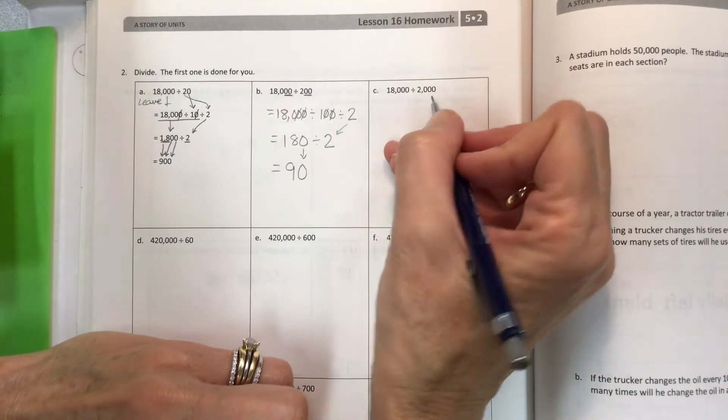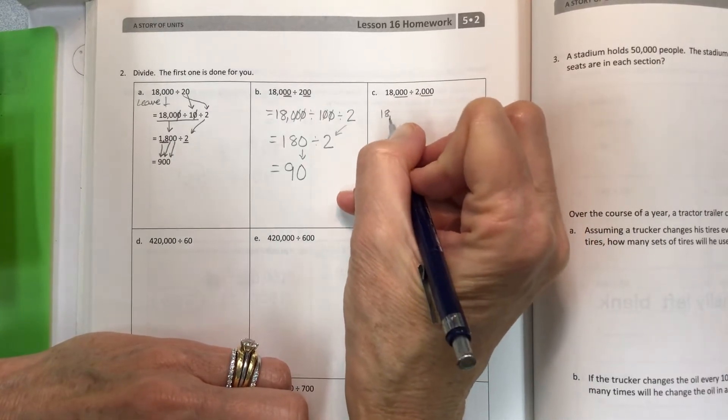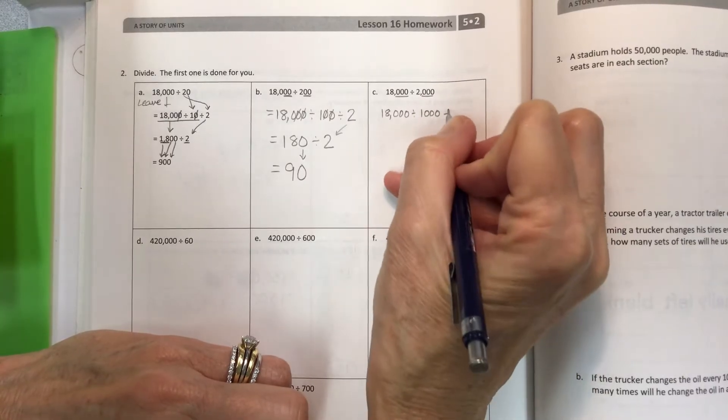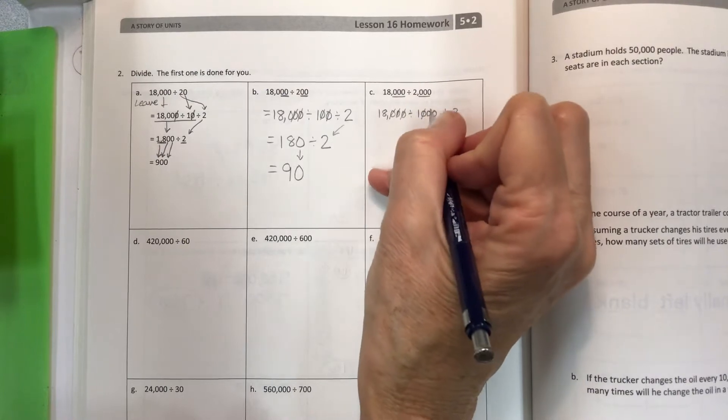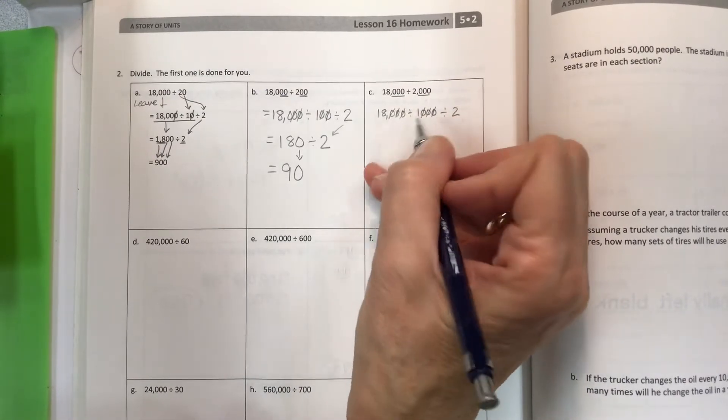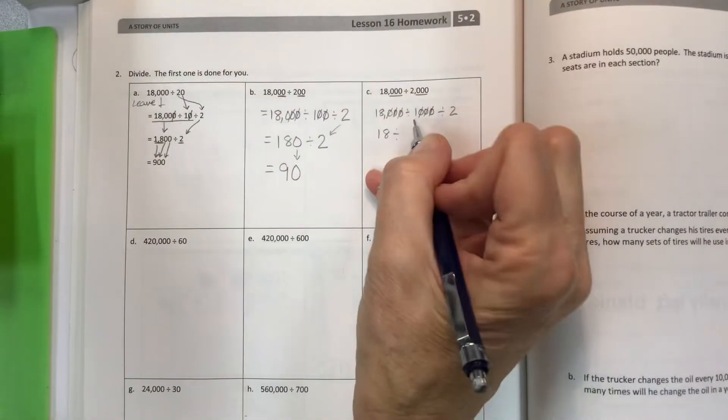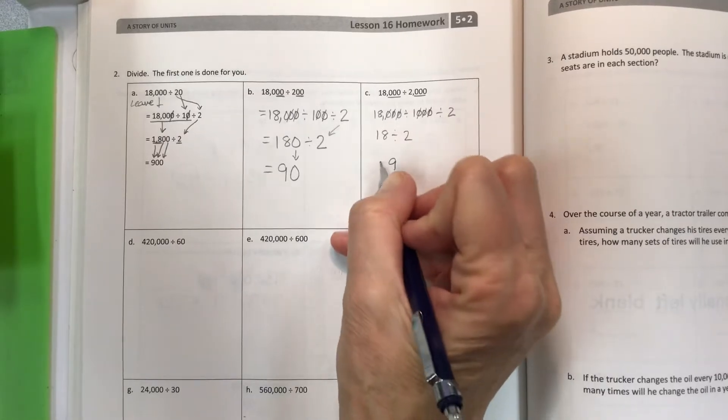Next one is 18,000 divided by 2,000. I've got three zeros that I can potentially take out, divided by 1,000, then divided by 2. Since I have three zeros on both sides of the division sign, that leaves me with 18 divided by 1, then divided by 2, which leaves you 9.